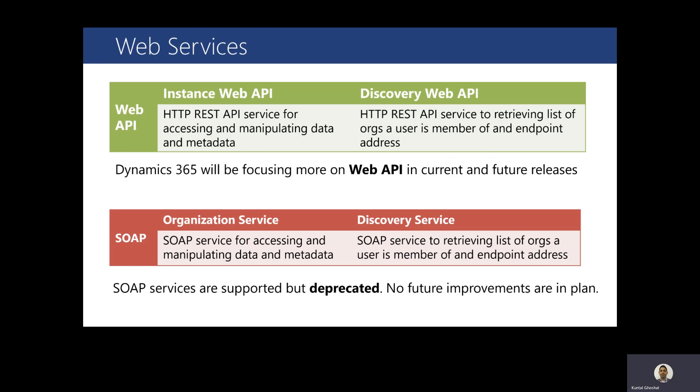Let us talk about the SOAP endpoint — the organization service. The organization service has been available since Dynamics CRM 2011 and is the web service most developers working with Dynamics 365 Customer use. It is optimized for use with .NET. Please remember, the .NET assemblies for the organization service currently use a 2011 SOAP endpoint, which has been deprecated. The SDK assemblies will eventually be migrated to internally use the Web API instead of the 2011 SOAP endpoint.